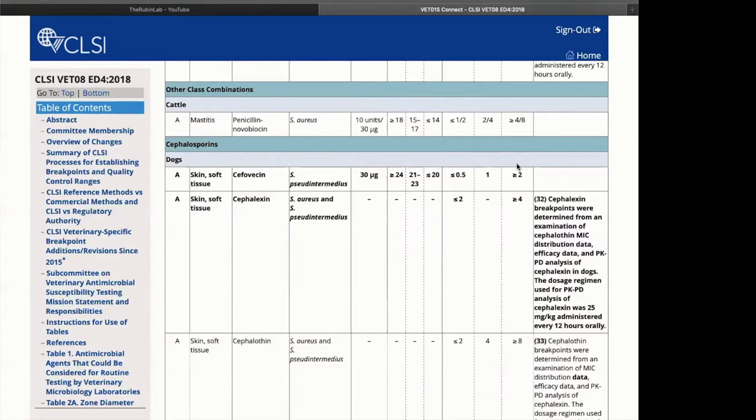Similarly, just to the right, we have our MIC interpretive criteria, where an MIC of less than or equal to 0.5 would be considered susceptible, 1 intermediate, and greater than or equal to 2 resistant.